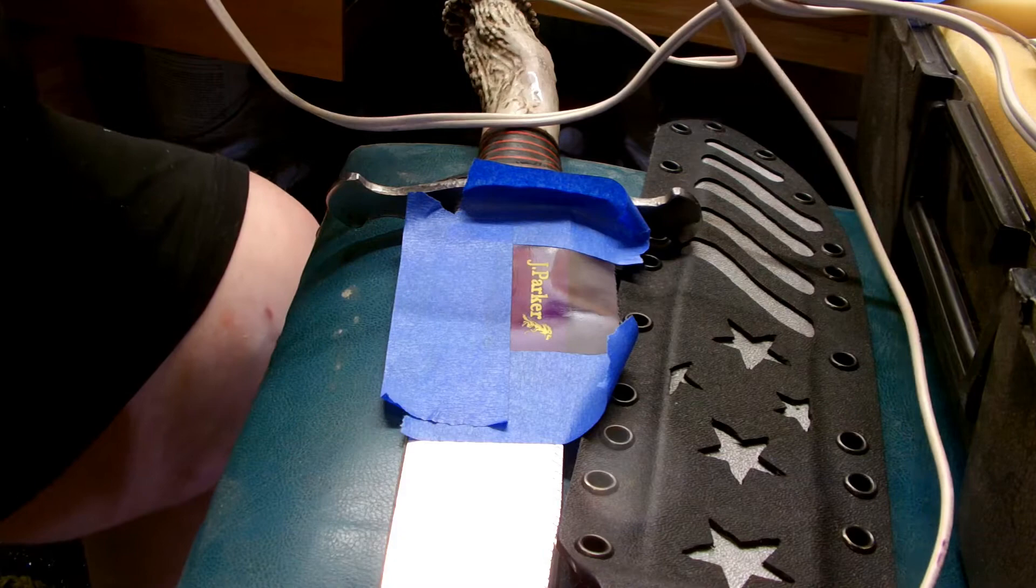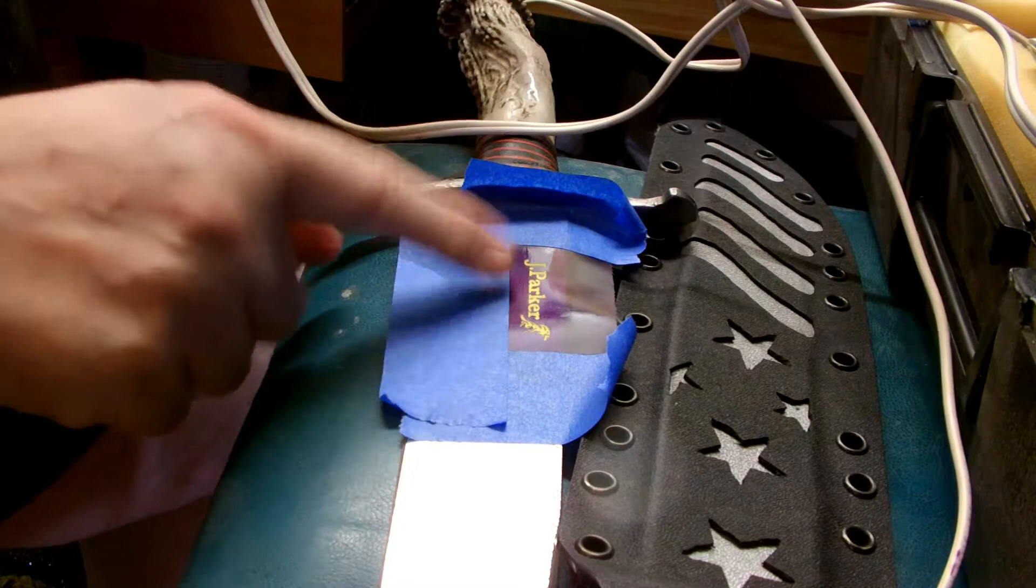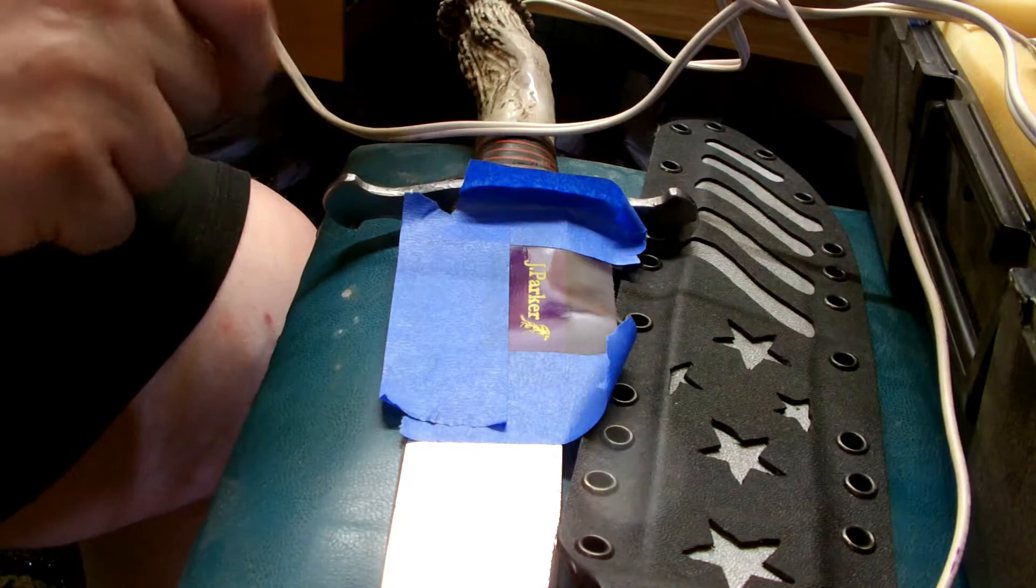Hey everyone, it's Jake with Dark Wolf Knives. Today we're just going to do a real quick etching on this Bowie Knife. I've got the new labels in here. Unfortunately, they're the wrong size.